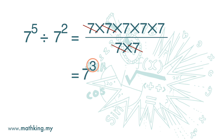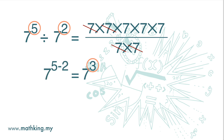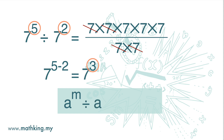This is the same as taking the index of 5 and then subtracting 2 from it. So 7 to the power of 5 divided by 7 to the power of 2 is the same as taking the difference of the indices: 5 minus 2. So we have the formula: a to the power of m divided by a to the power of n is equal to a to the power of m minus n.